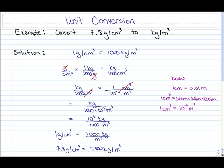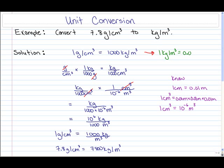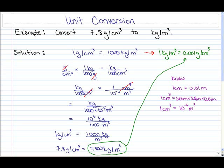What if we wanted to go backwards — given kilograms per cubic meter and converting to grams per cubic centimeter? Since we know the conversion, 1 kilogram per cubic meter equals 0.001 grams per cubic centimeter. So if we take 7,800 kilograms per cubic meter and multiply by 0.001, we get 7.8 grams per cubic centimeter.